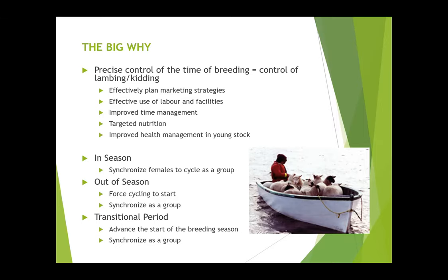In season, mainly we're synchronizing females to cycle as a group. Out of season, sometimes it's for synchronizing and sometimes it's to get them to actually breed and conceive at a time of year where the sheep normally wouldn't do that. And then in the transitional period — that's between the in and out of season — there's a period for every breed where they may be cycling but not consistently. What we can do is advance the normal breeding season by working within that transitional period, maybe four or five weeks earlier than normal.